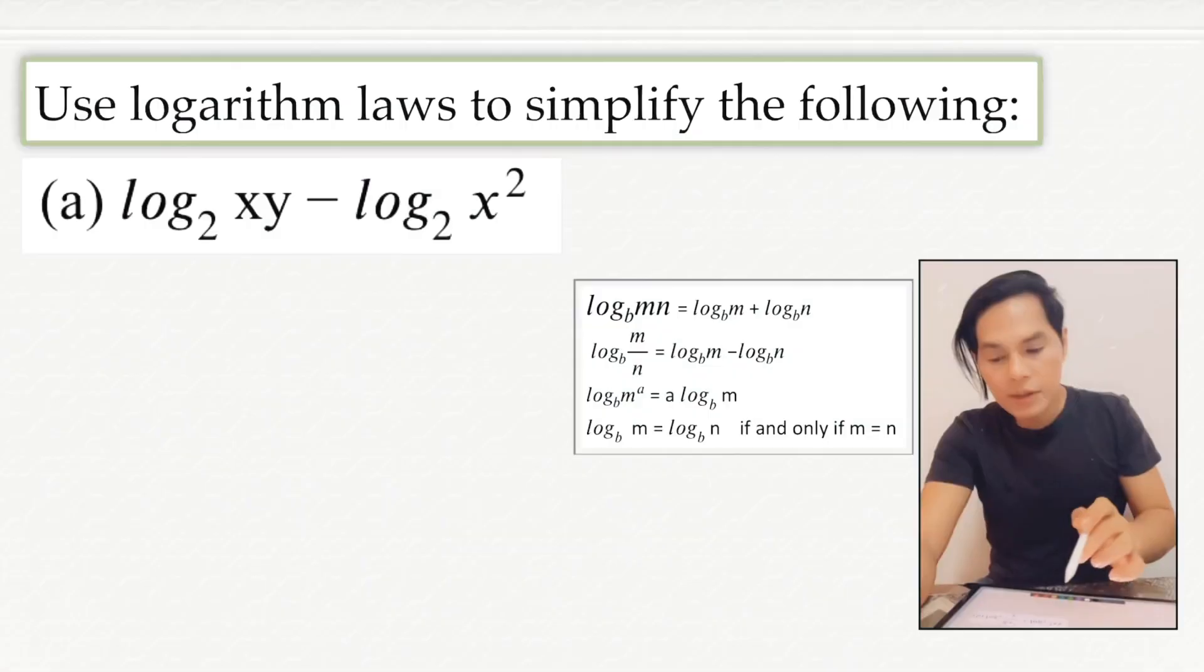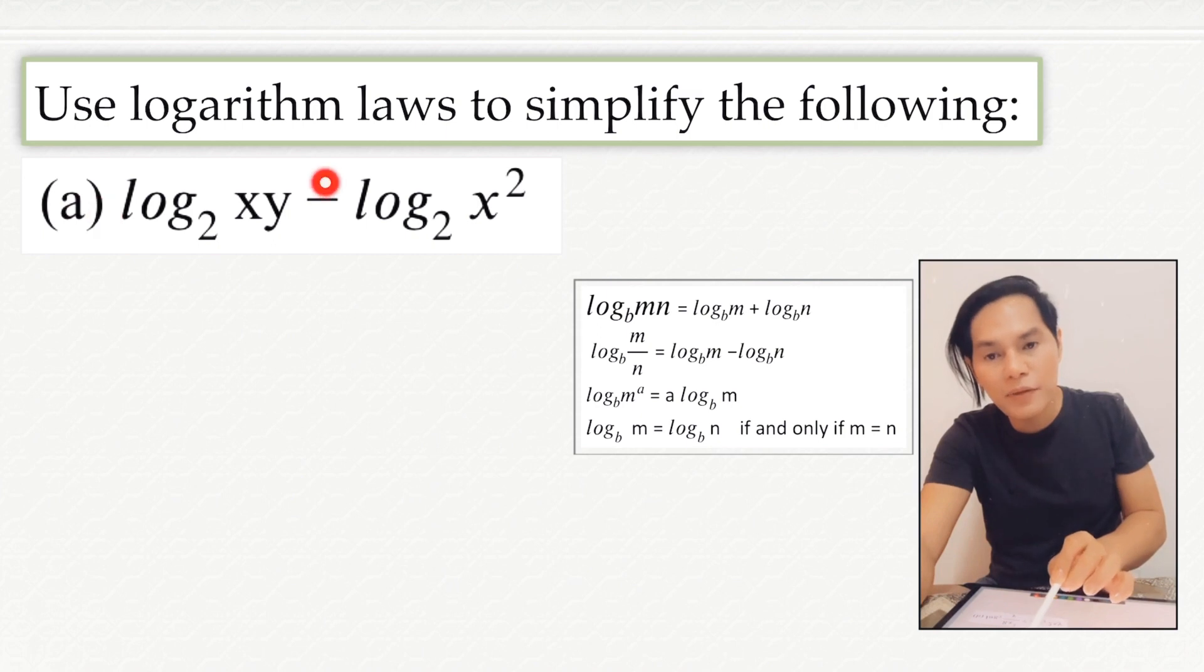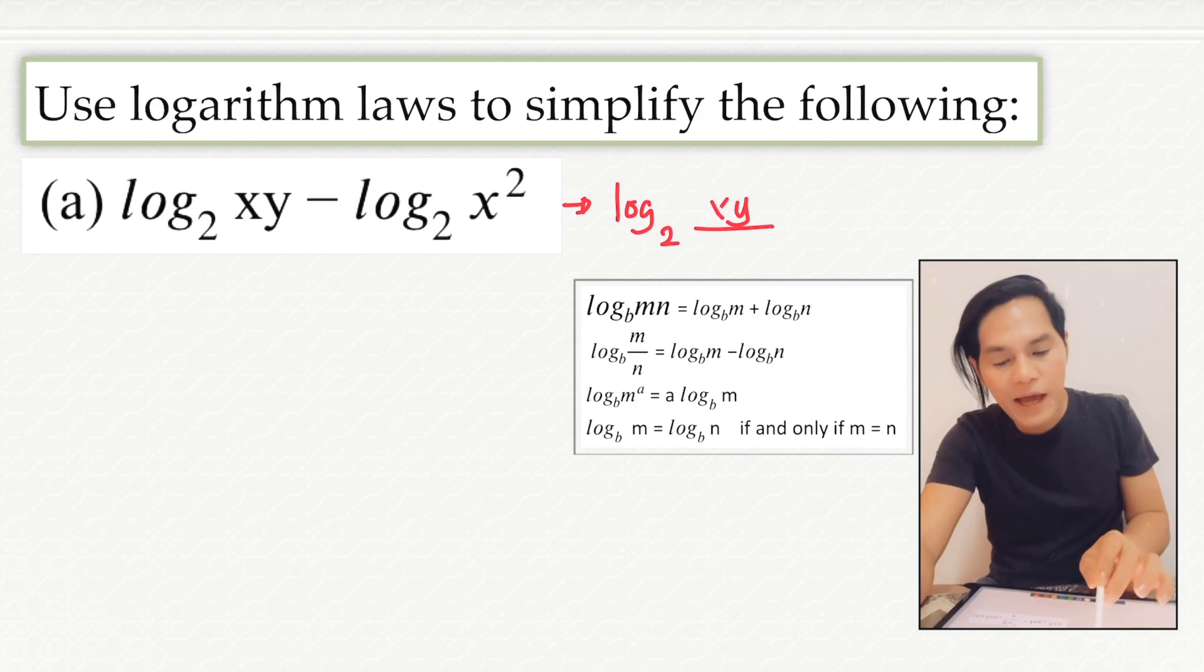To start with, now check the logarithmic expression in letter A. This is subtraction, and therefore when we are going to rewrite this, this will be now in a form of the log of xy divided by x squared. Then copy the same base, which is 2.